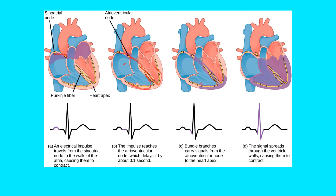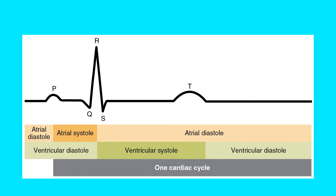There's a slight delay so that your atriums contract first, then ventricles contract — atria then ventricle, sequentially. As you can see at the bottom, this is all correlated to your EKG as well. This diagram is showing atriums versus ventricles and showing one whole cardiac cycle of the P wave, the QRS complex, and then the T wave.